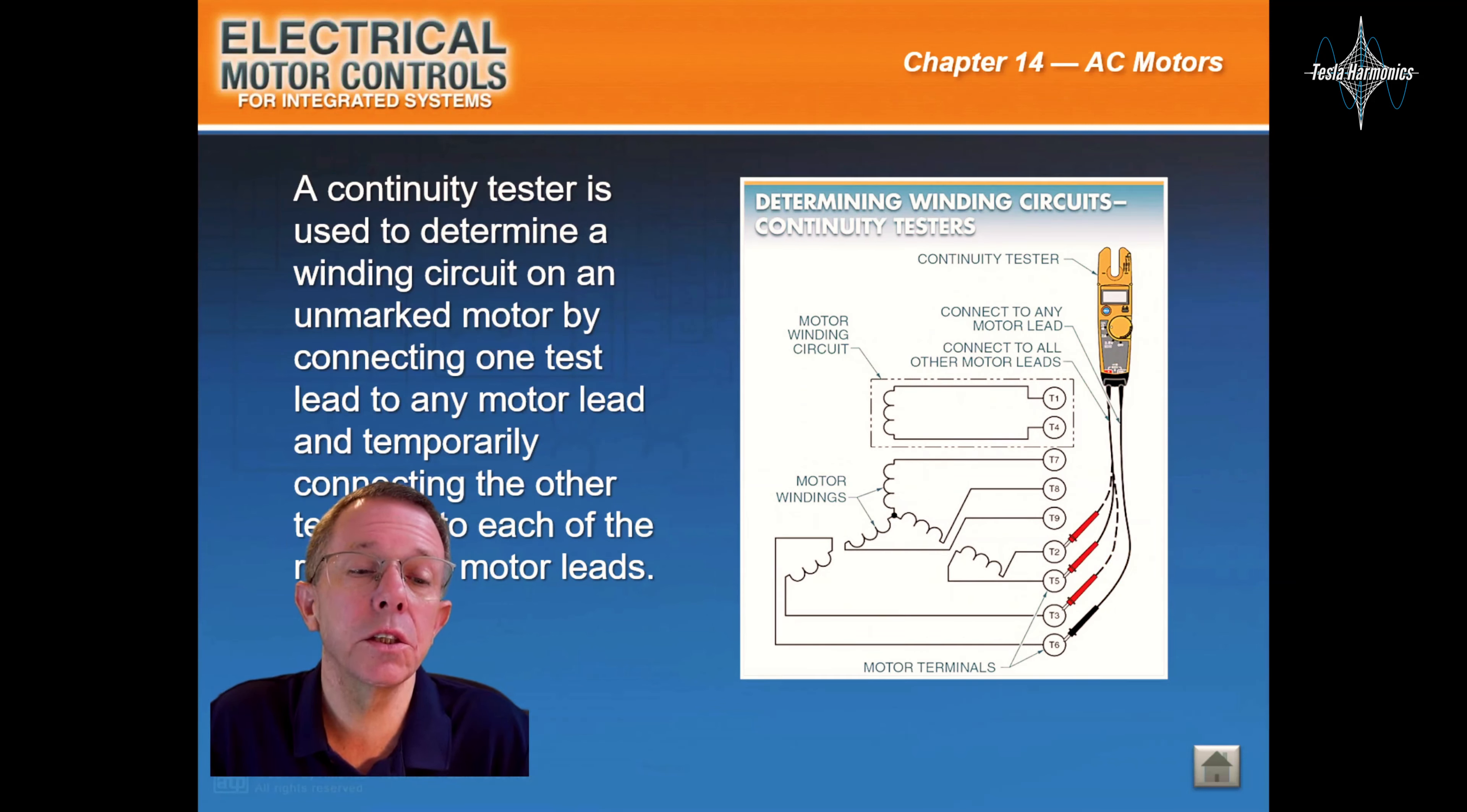A continuity tester is used to determine a winding circuit from an unmarked motor by connecting one test lead to any motor lead and temporarily connecting another test lead to each of the remaining motor leads.